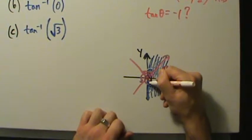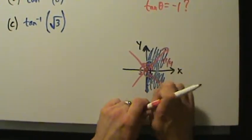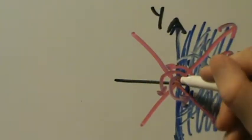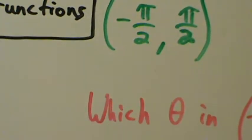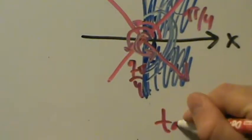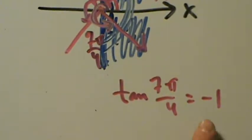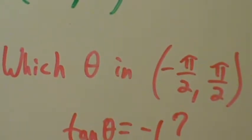What about 7 pi over 4? Be careful — 7 pi over 4 is in the fourth quadrant. We do know that tangent of 7 pi over 4 is actually negative 1, which gives us the value we want. But 7 pi over 4 is not in the interval from negative pi over 2 to positive pi over 2, so we can't use it. It's not our answer because it's not in the range of the inverse tangent function.